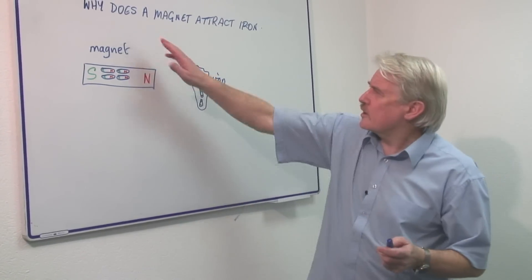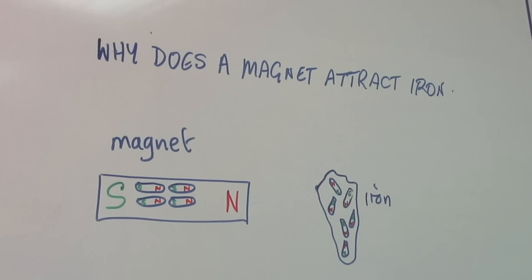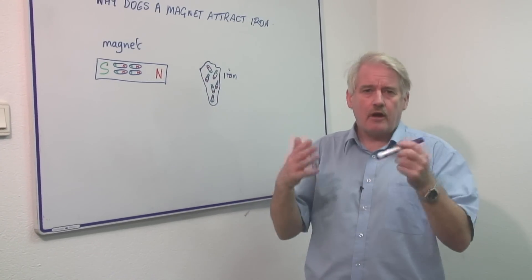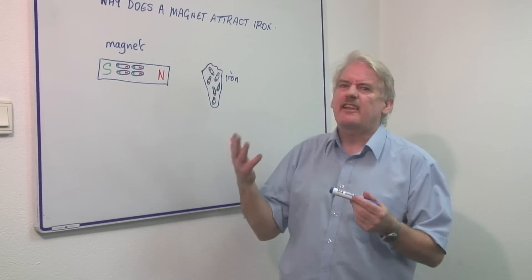Hi, I'm Steve Jones and I'm going to explain why a magnet attracts iron. Not just iron, other ferromagnetic materials and there are other magnetic materials like iron.